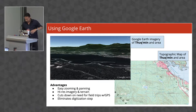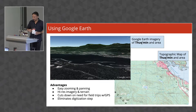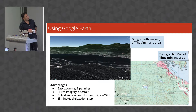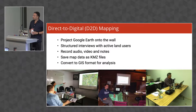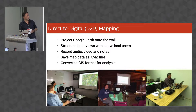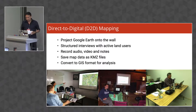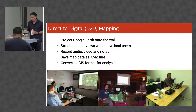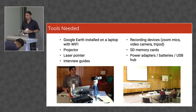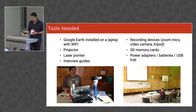In about 2012 we discovered that the drawing tools in Google Earth were pretty fantastic. When you look at a conventional topographic map versus the same area in Google Earth, what you get is a three-dimensional picture of the landscape — much prettier, you can picture the mountains, see the places and beaches, and it's easy to navigate. So we thought: how do we put this into a method? We project the map up on the wall, have structured interviews, record audio and video, and save maps in KMZ format. All base map data is collected using Google Earth, then converted to GIS format for analysis. It requires just a laptop, projector, laser pointer, interview guides, recording devices, and SD cards.